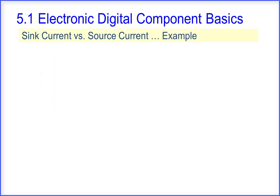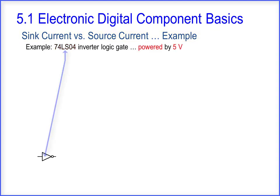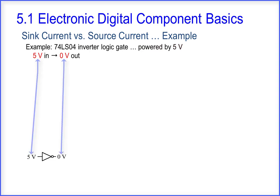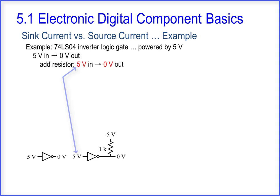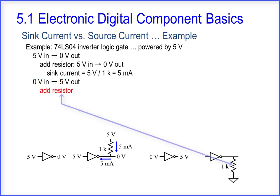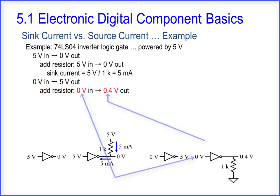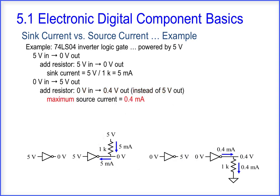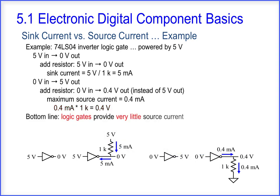Using the 74LS04 inverter logic gate powered by 5 volts as an example: 5 volts in results in 0 volts out. Adding a resistor to the output, the sink current equals 5 volts divided by 1kΩ, which equals 5 milliamps. For 0 volts in, the output should be 5 volts out, but with a resistor added, 0 volts in results in only 0.4 volts out — because the maximum source current is 0.4 milliamps, and 0.4 milliamps times 1kΩ equals 0.4 volts. Bottom line: logic gates provide very little source current.